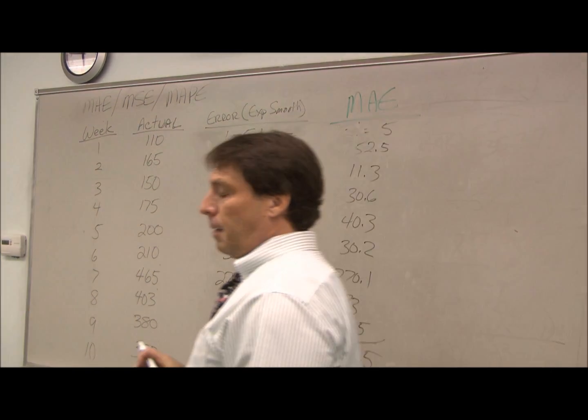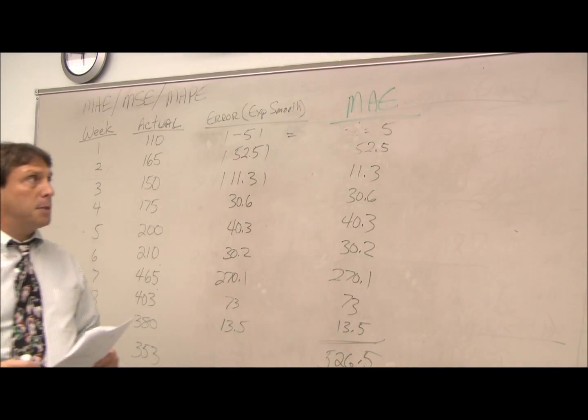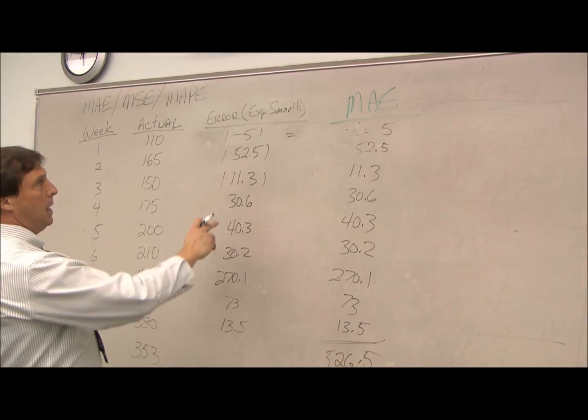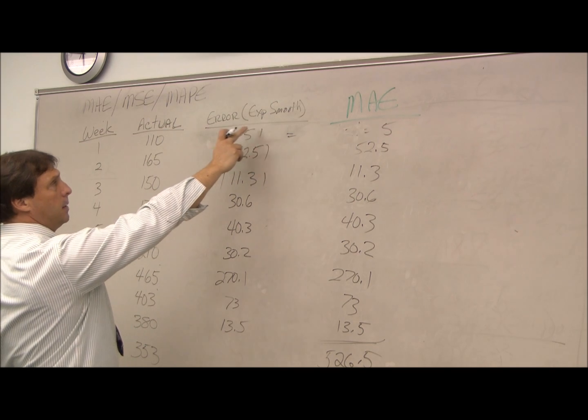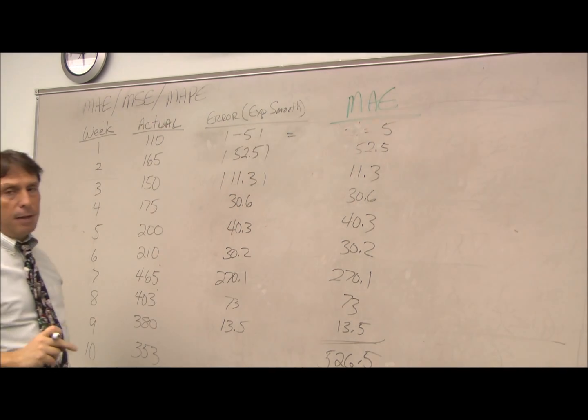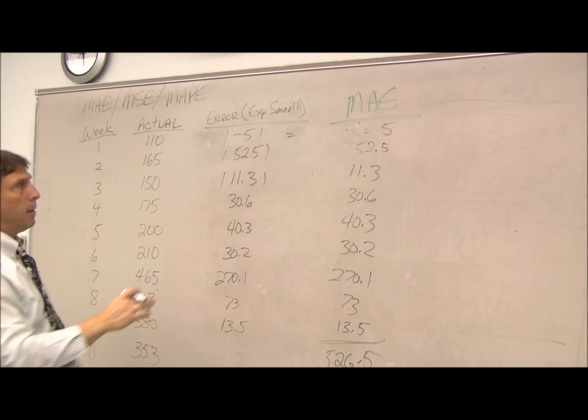First we're going to look at our mean absolute error. The mean means we take our error - this is from our exponential smoothing problem we looked at earlier.